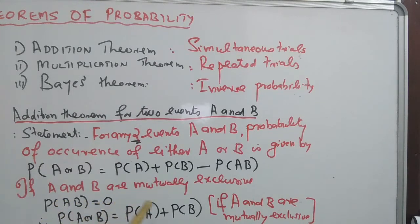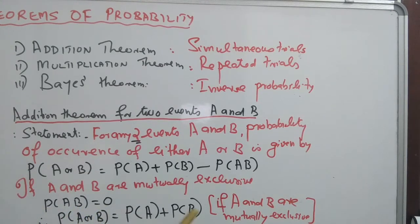There is a special condition: if A and B are mutually exclusive, meaning their simultaneous occurrence is impossible, then probability of AB is zero. Therefore, if A and B are mutually exclusive, P of A or B equals P of A plus P of B. This is the addition theorem for mutually exclusive events.